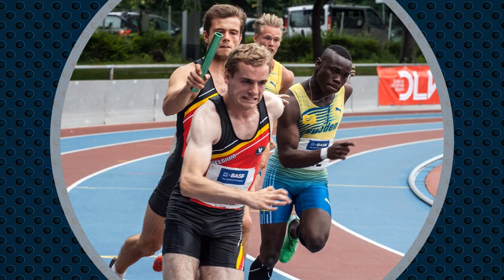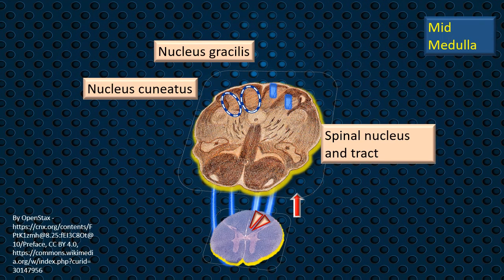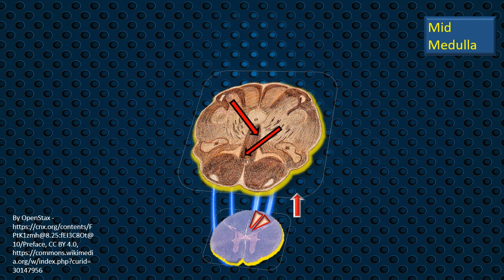Besides the nucleus gracilis and nucleus cuneatus, it is appropriate to mention that in the brainstem the cranial components of the same type of fibers join in, forming a spinal nucleus and spinal tract located lateral to the nucleus cuneatus. Functionally the same, this tract conveys corresponding information brought in through the cranial nerves.